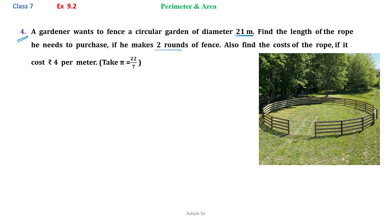So in this question, diameter of this circular garden, diameter is given to us as 21 meter. We can find the radius. So radius here is equals to 21 by 2 meters.